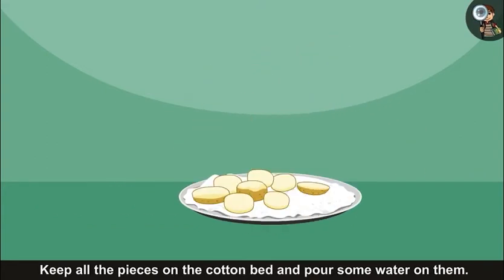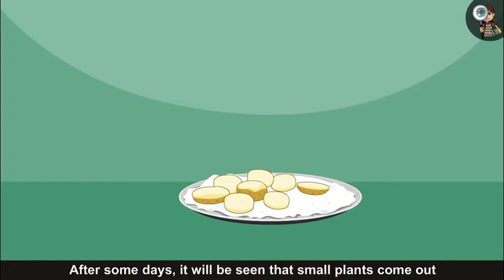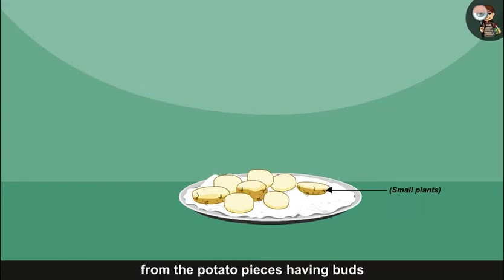Keep all the pieces on the cotton bed and pour some water on them. After some days it will be seen that small plants come out from the potato pieces having buds while no plants are seen in the other pieces.